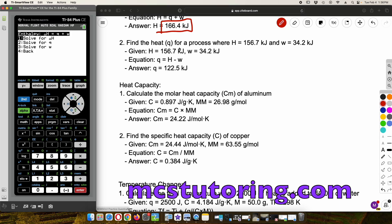Okay. Now question two, find the heat for a process where H is 156.7 kilojoules and W equals 34.2 kilojoules. So in this case, we're going to solve for Q. That's option two. And then what's the delta H? Okay. The given is for H is 156.7. Very good. And then the W is 34.2.